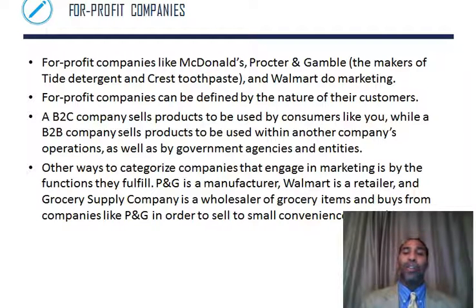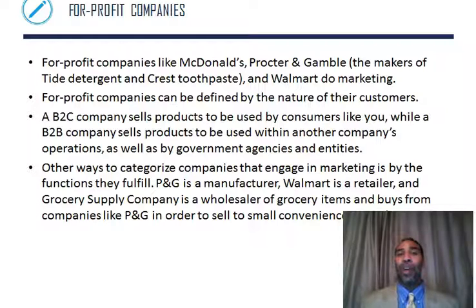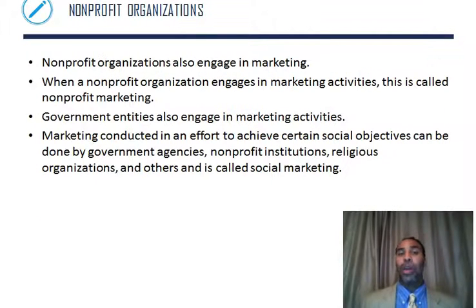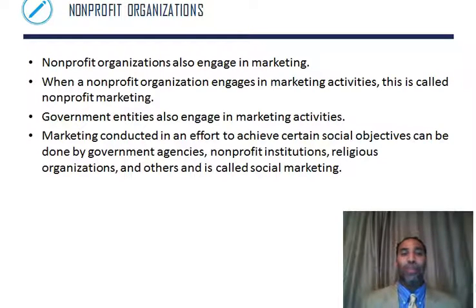Another way to categorize companies is by the functions they fulfill. Procter & Gamble is a manufacturer — they create goods. Walmart is a retailer because they sell those goods. A grocery supply chain is a wholesaler of grocery items — it buys from companies like Procter & Gamble and then sells to small convenience store chains. Non-profit organizations also engage in marketing; when a non-profit engages in marketing activities, this is called non-profit marketing — it's still just marketing, but for a non-profit company.